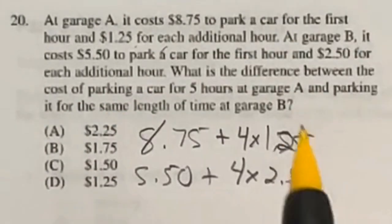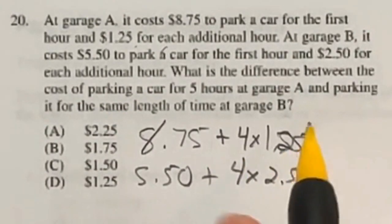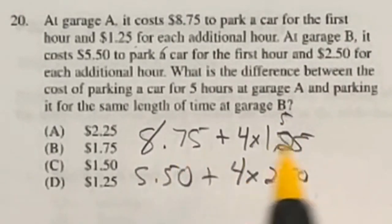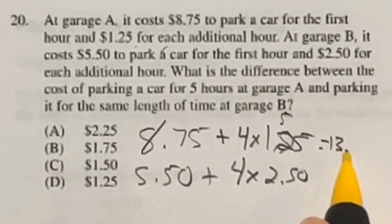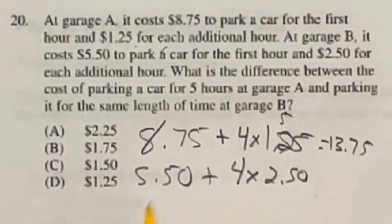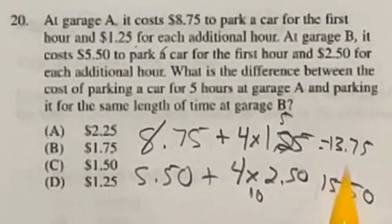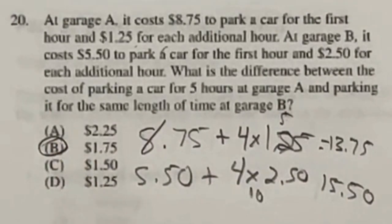So now let's go ahead and multiply these through. 4 times the $1.25 is going to give me a total of 5. When I add 5 to that $8.75, that's going to end up giving me $13.75. Then down here, I'm looking at 4 times the $2.50, which is 10. 10 plus the $5.50 is going to give me $15.50. So what's the difference between these two? Well, that difference is going to end up being $1.75 option B.